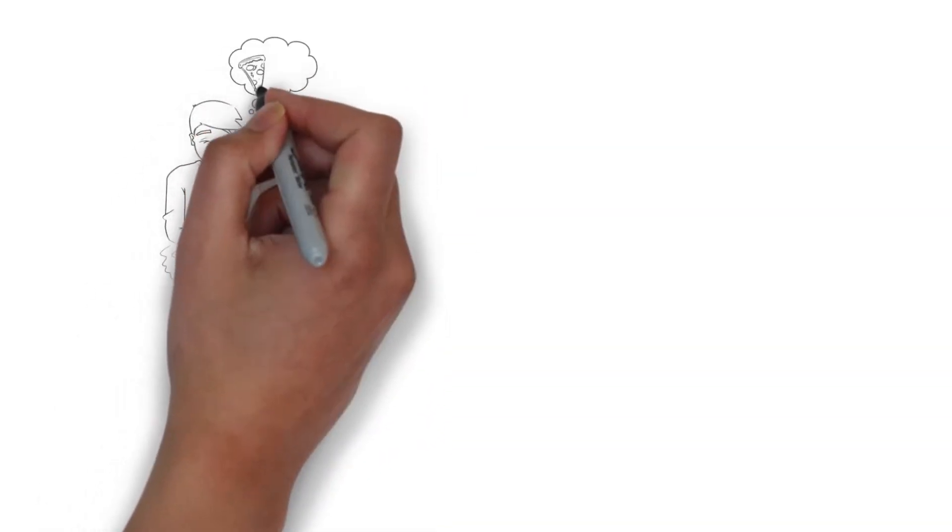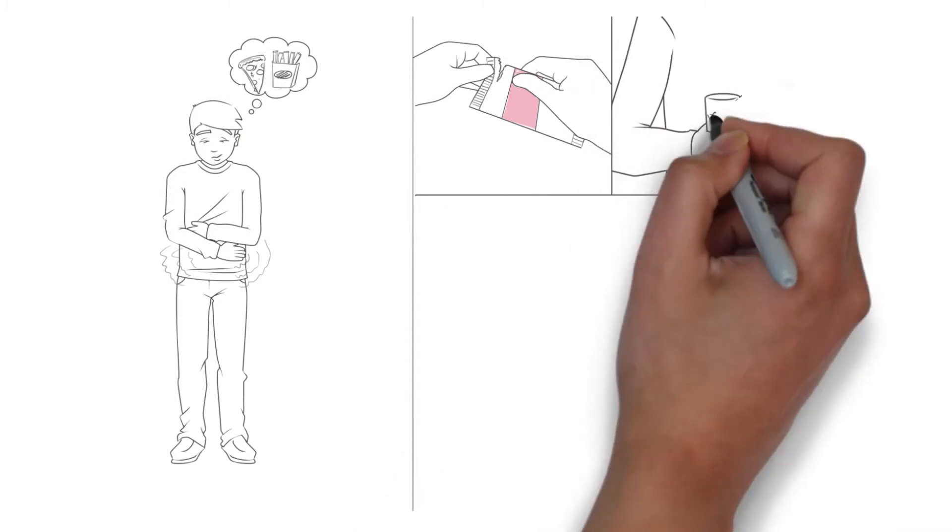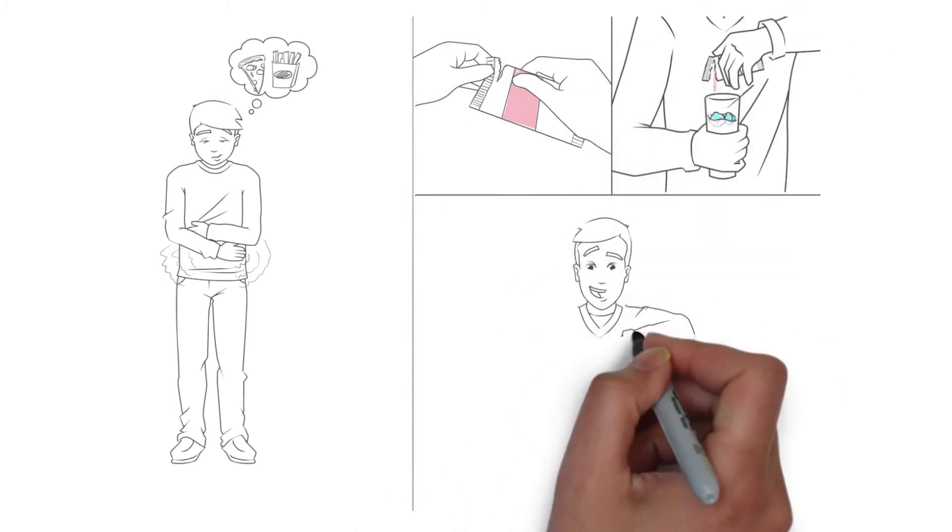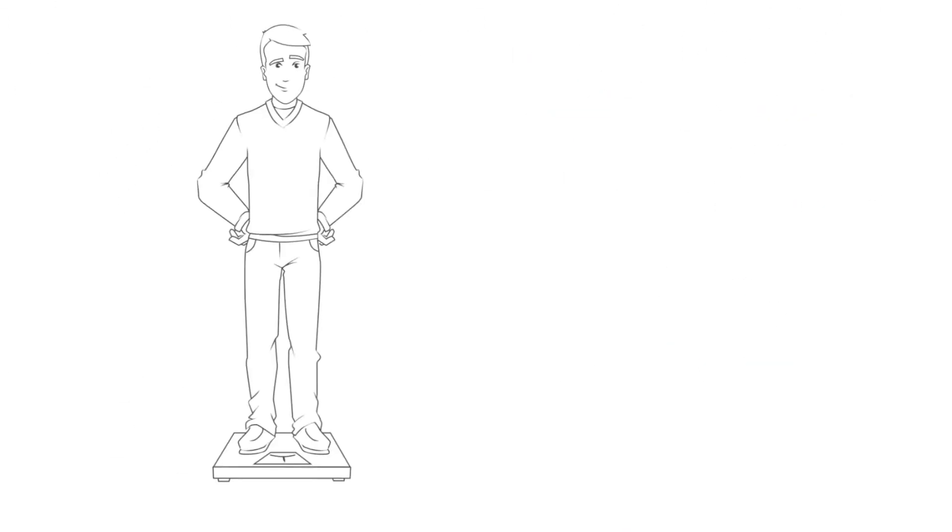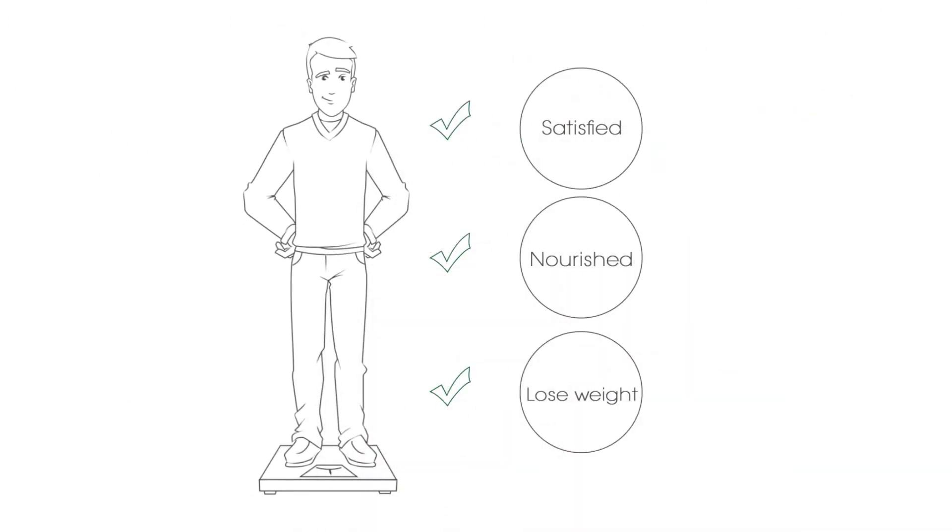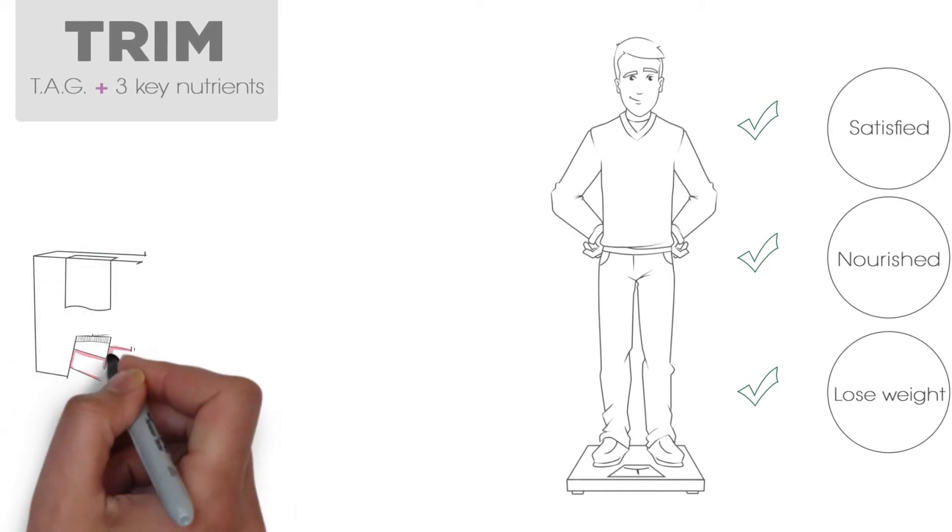You can harness the power of primal energy systems that help with hunger and satiety while experiencing the optimum health benefits of ancient grains. That way you can be satisfied, nourished, and lose weight.